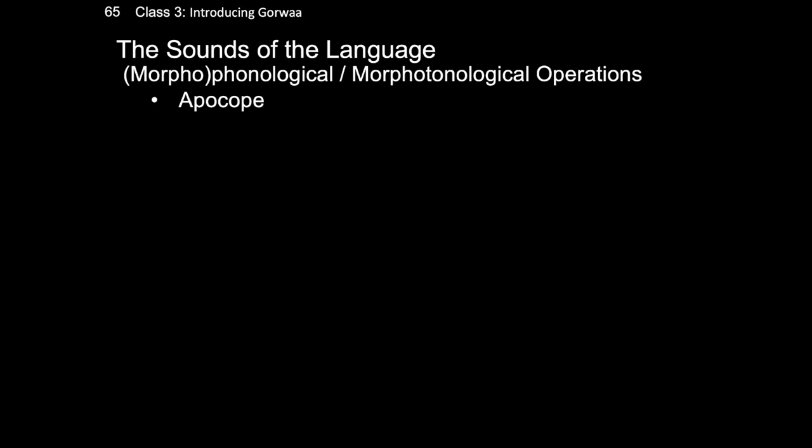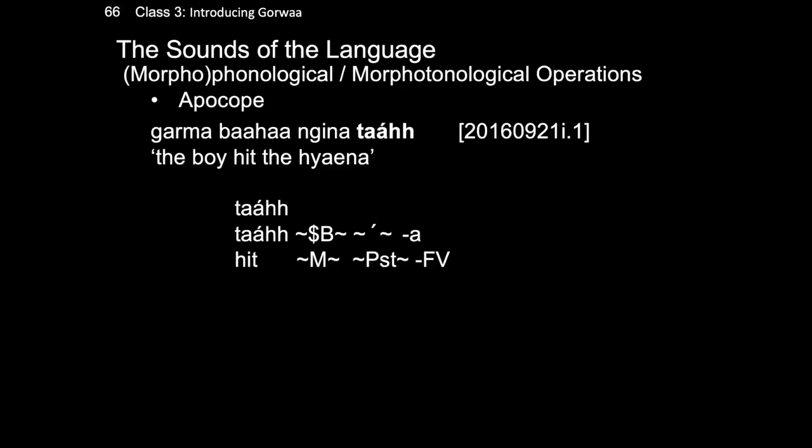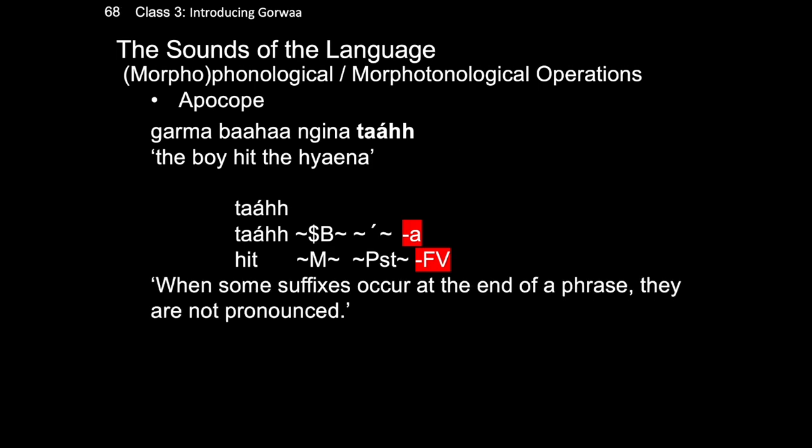A further operation called apokopi can affect both segments like vowels and consonants, as well as suprasegments like tone. Apokopi is an operation in which words lose their final sounds in certain environments. Take once again our example, garma baha nina tah, and the verb at the end. You'll notice that the verb actually has a final morpheme ah, which is not pronounced in the surface realization. This is due to the apokopi operation, which basically says that when some suffixes occur at the end of a phrase, they are not pronounced.